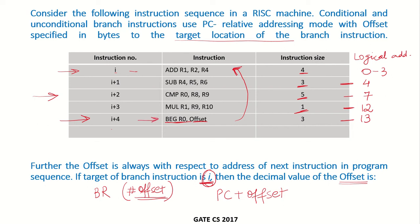Now when this branch instruction is being executed, the program counter is already pointing to the next instruction in the sequence, which would be I plus 5. So what is going to be the address of I plus 5? Since instruction I plus 4 is of size 3, I plus 5 would be at address 16. So the program counter is having a value of 16.